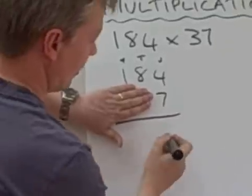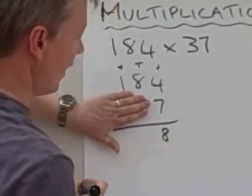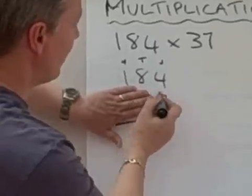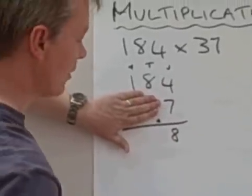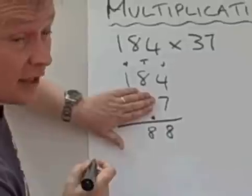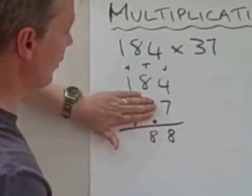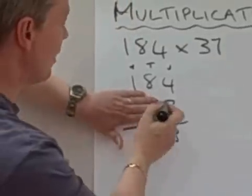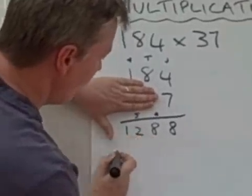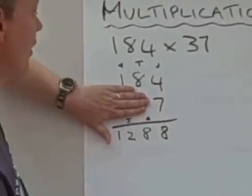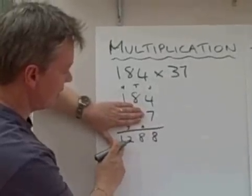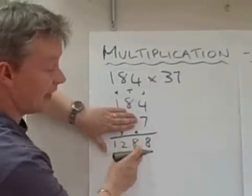So, seven times four is 28, there's the eight, I've got to carry the two, I'm going to write it there just to remind me. Seven times eight is 56, plus the two is 58, so I'll write down the eight, and I'm also going to write down the five again just to remind me. Seven times one is seven, add the five is 12. So, the first thing I've done is I've multiplied 184 by seven and the answer is 1,288.